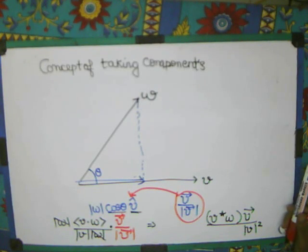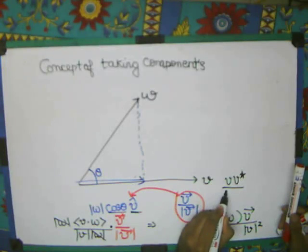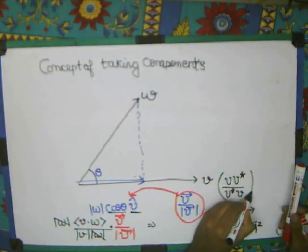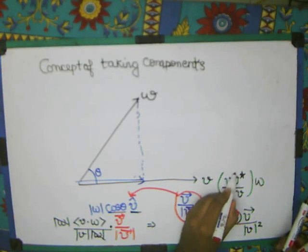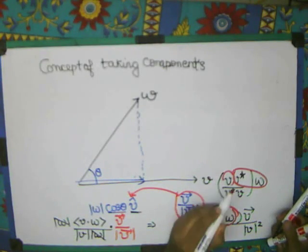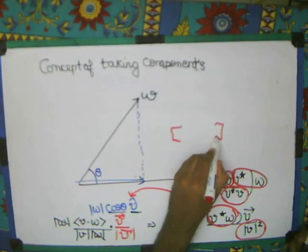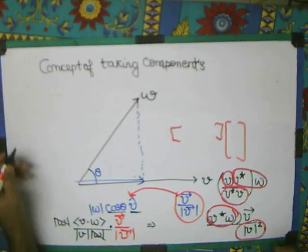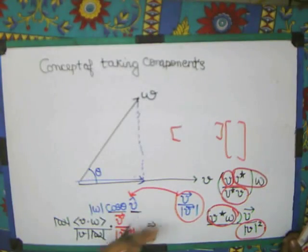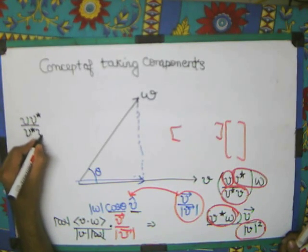This gets cancelled. So, what I am left with is this. Now, I write this as V V star upon V star V times W. Why am I doing it? See, because this inner product is equivalent to this which will give me a scalar and what I will be left is this part, this V and here mod of V whole square can be written as V star V because this is nothing but this multiplication.